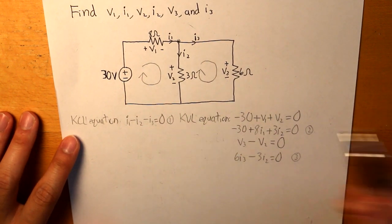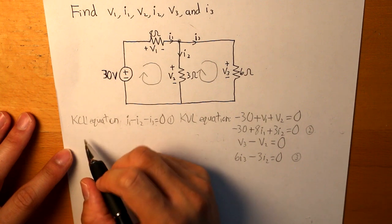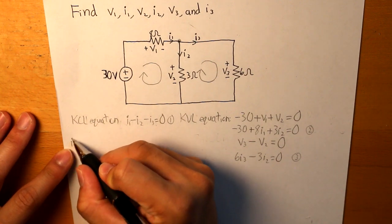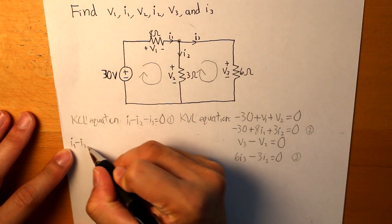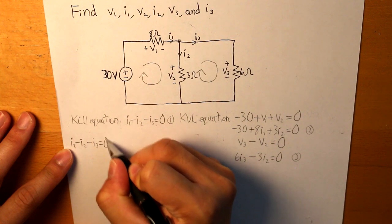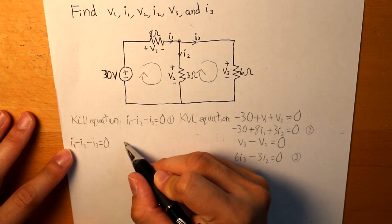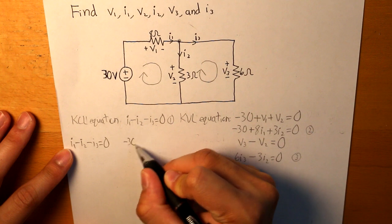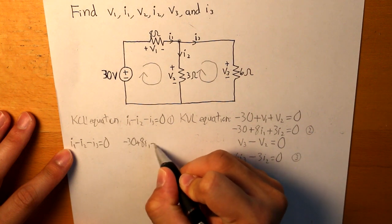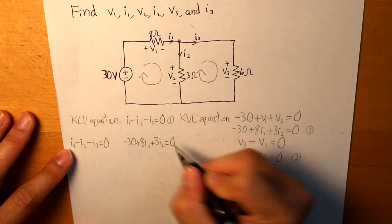And this is our first equation. And now I'm just going to write out everything together. I1 minus I2 minus I3 equals equal to 0. And then we have here minus 30 plus 8I1 plus 3I2 is equal to 0.